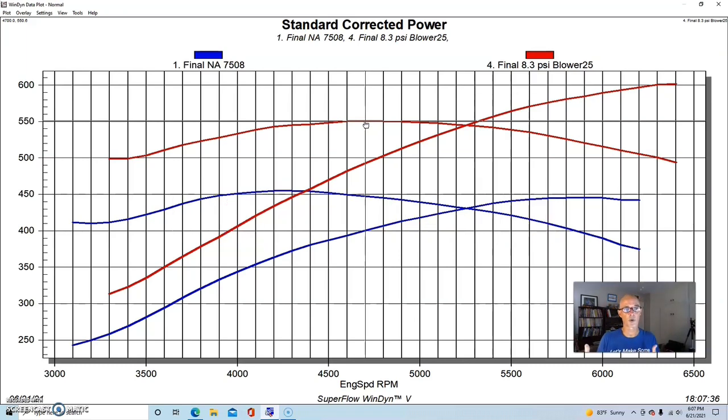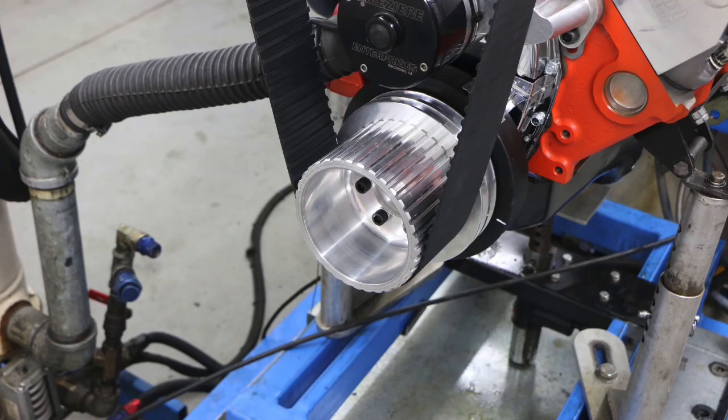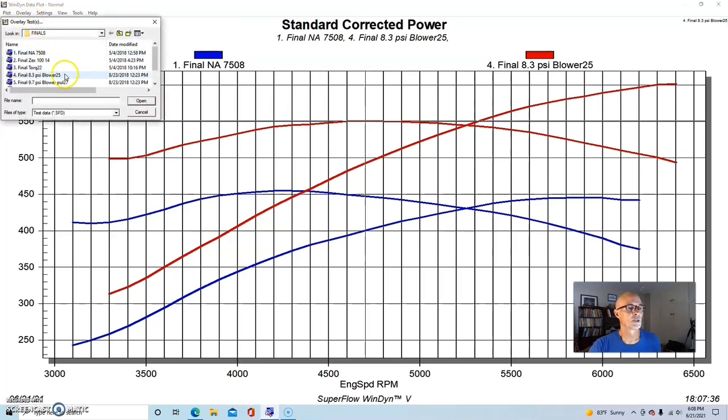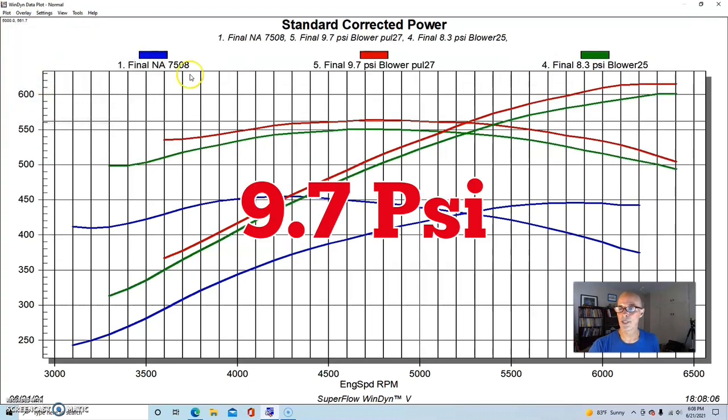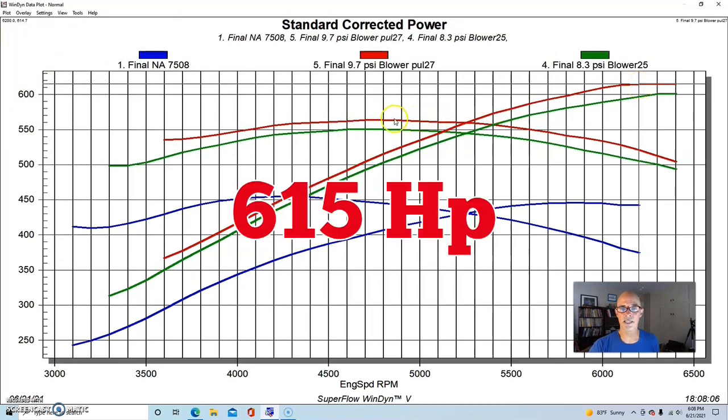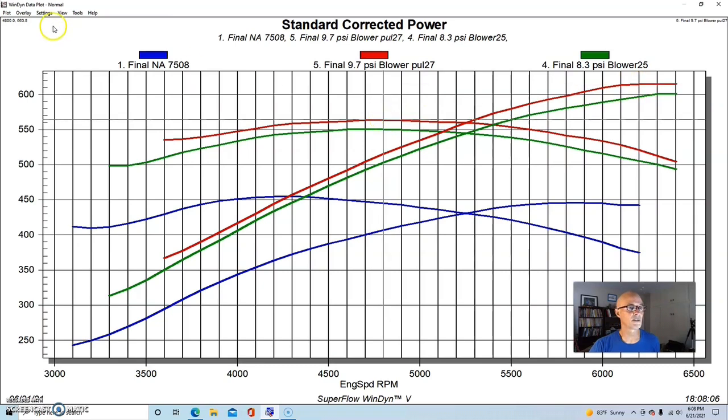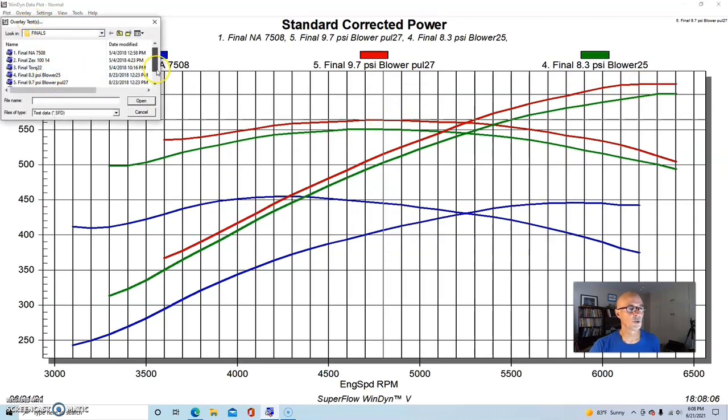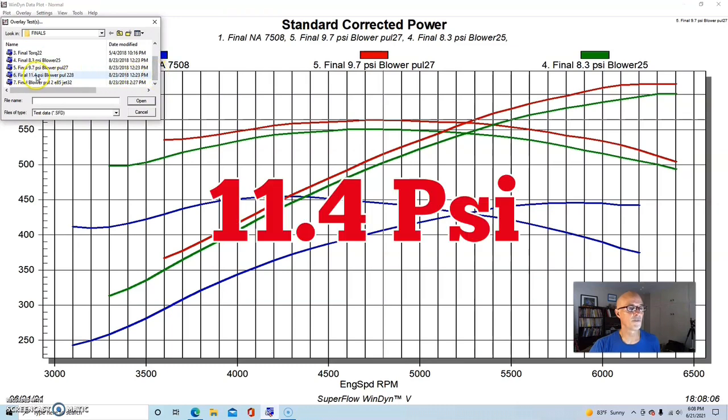We did what everybody else does with a blower or turbo - we turned the boost up by changing the pulley ratio. Put a bigger crank pulley on and/or a smaller blower pulley, you'll spin the blower faster. That's exactly what we did. We raised the boost to 9.7 pounds and our peak power checked in at 615, peak torque was up a bit to 564 foot-pounds, and then finally to 11.4 pounds.